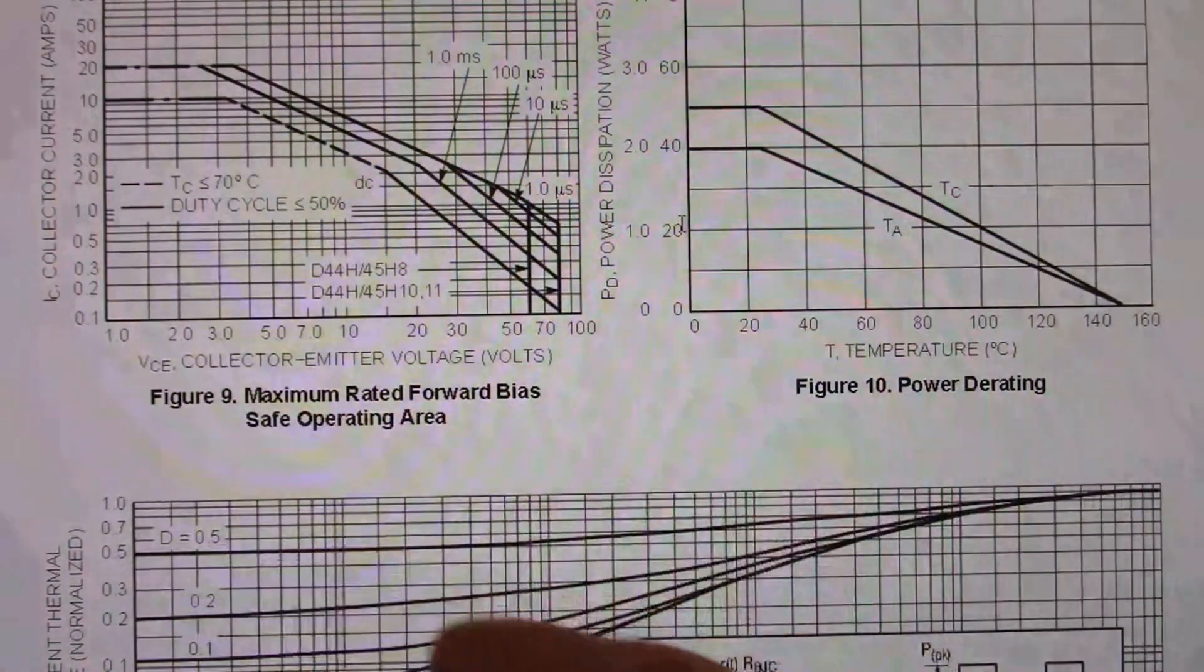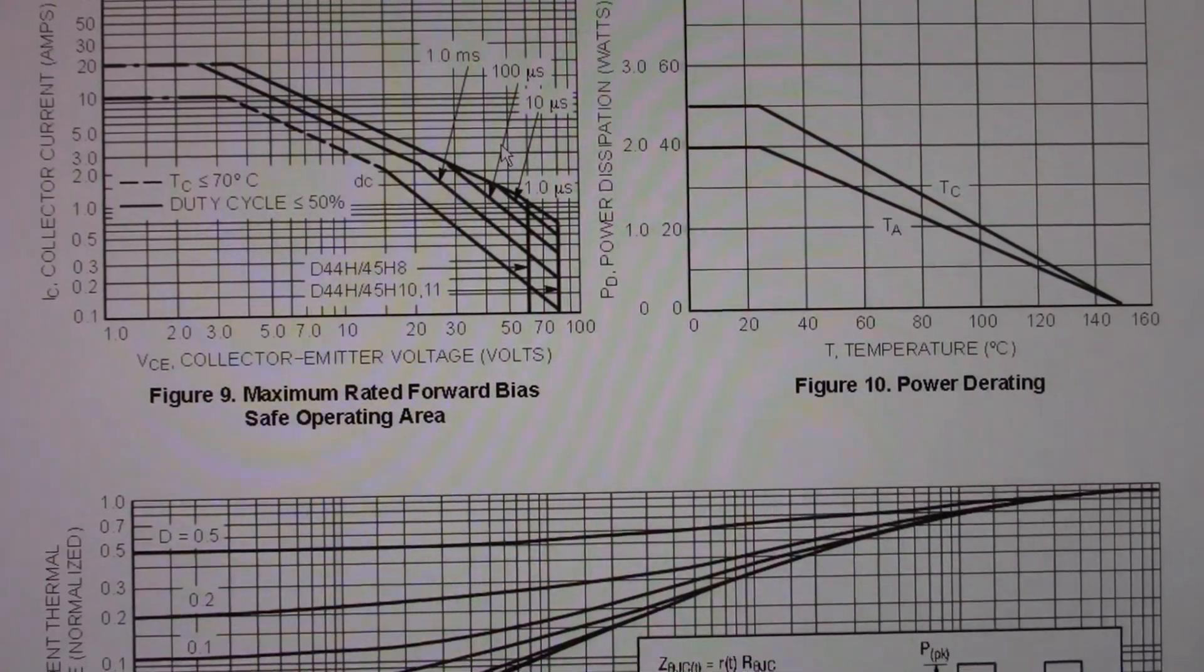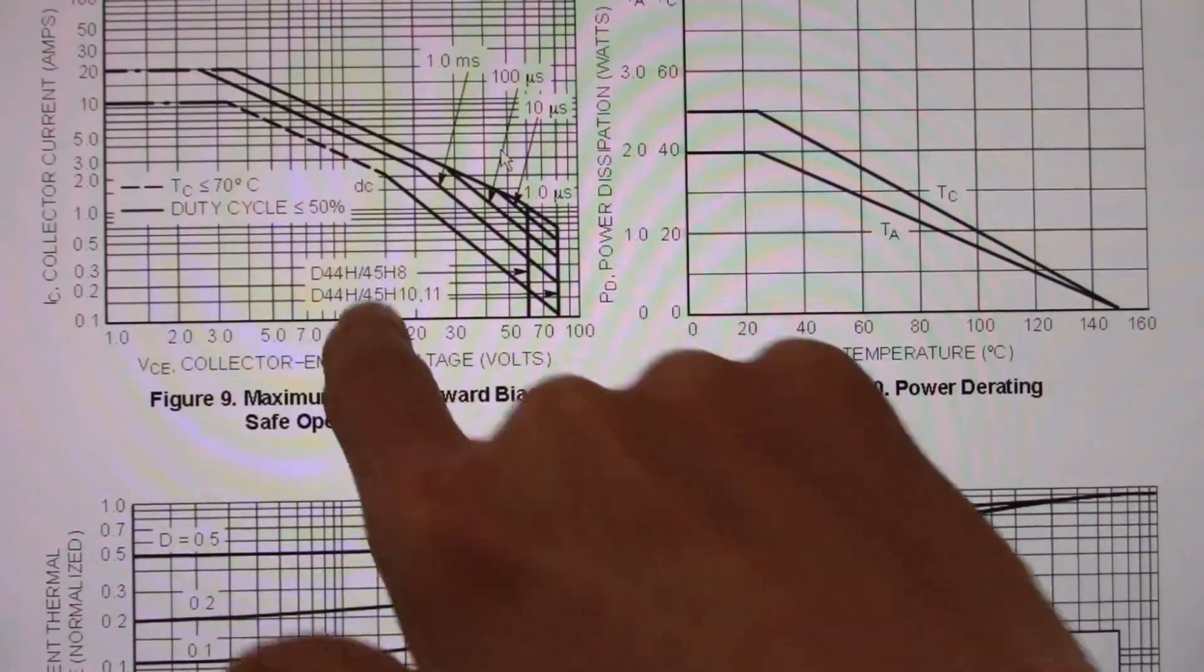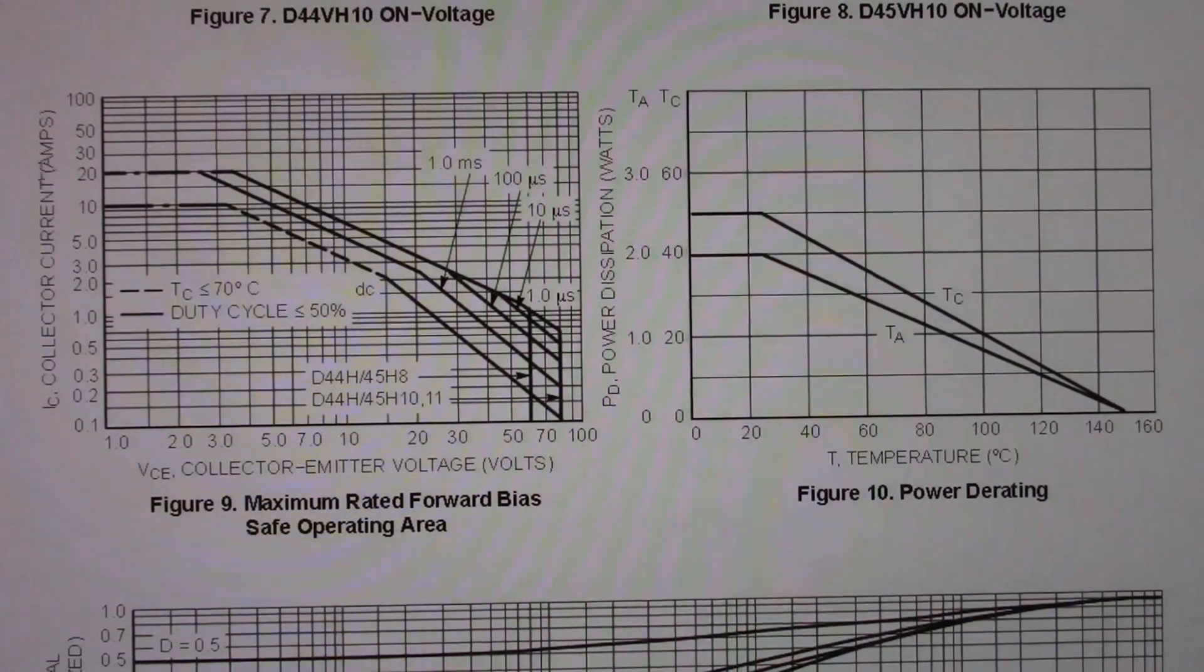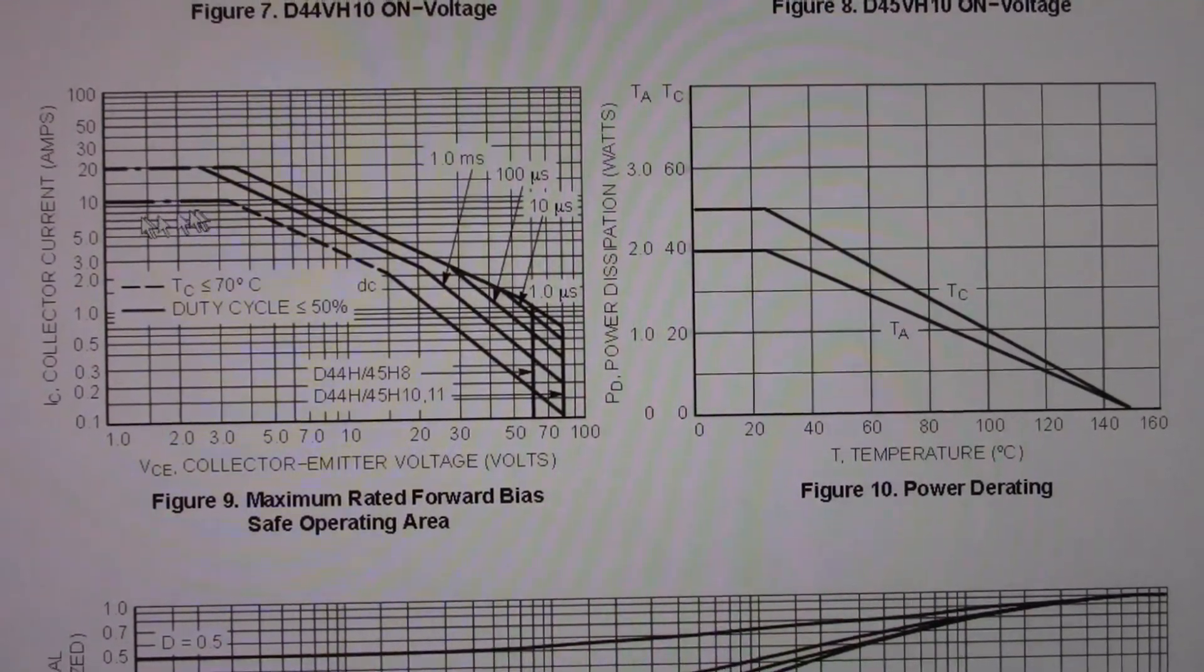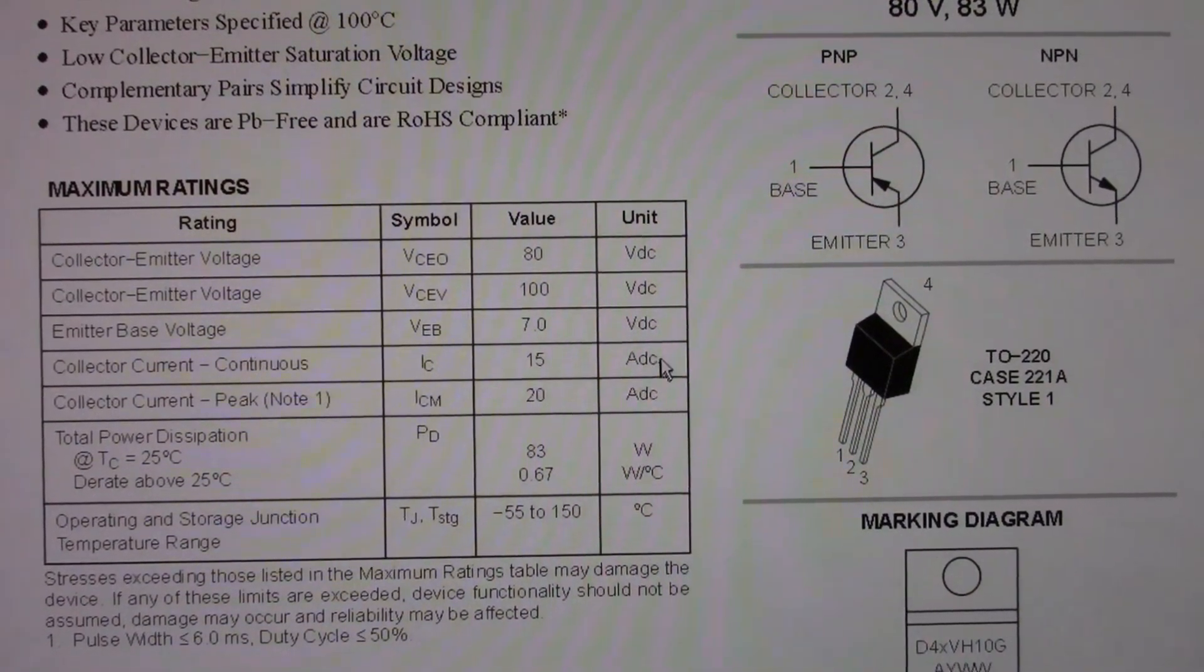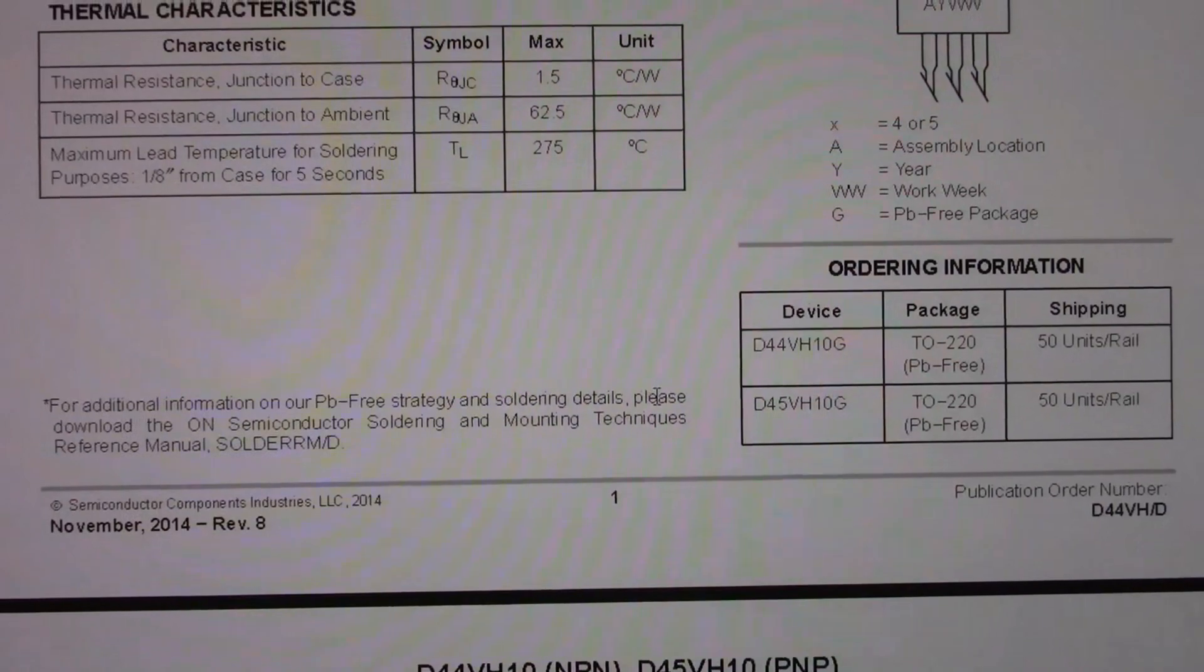Safe operating area. Nothing to write home about. I mean, they are TO220 case transistors with limited dissipation, lower voltage. They're not like the 5200 that's rated like 250 volts, 15 amps. But again, our amplifier is not using these at their maximum capability. Should be okay. I'm not sure what's going on here. The DC line is at 10 amps. And that's more than enough for what we need. Collector current continuous, 15 amps DC. Peak 20 amps. So I'm not sure what's going on with that safe operating area line.